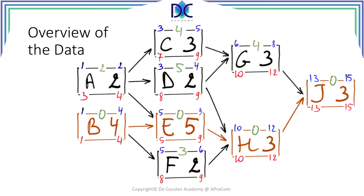The data are still the same. We have the precedence diagram, we have the early start and early finish dates, late start, late finish, slack, and critical path.